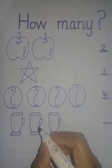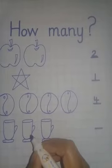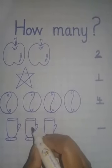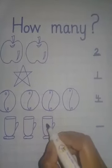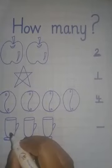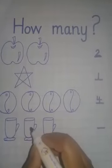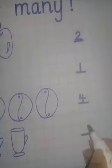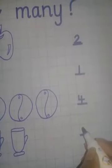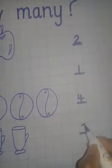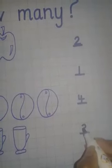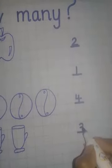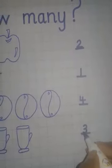Here are the cups. So children count the cups with me. One, two, three. Count again. One, two, three. So here I will write three. First make a half circle and then without lifting up your pencil, join another half circle with it like this.